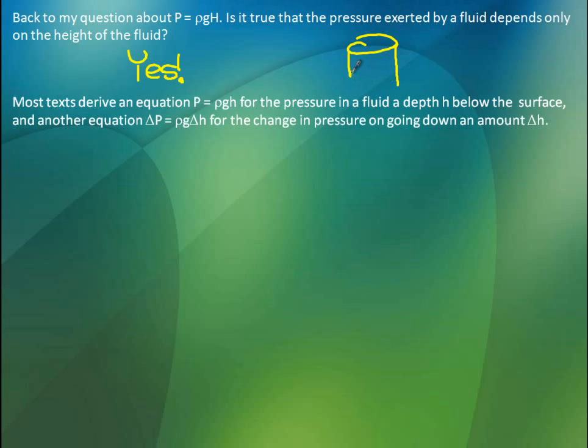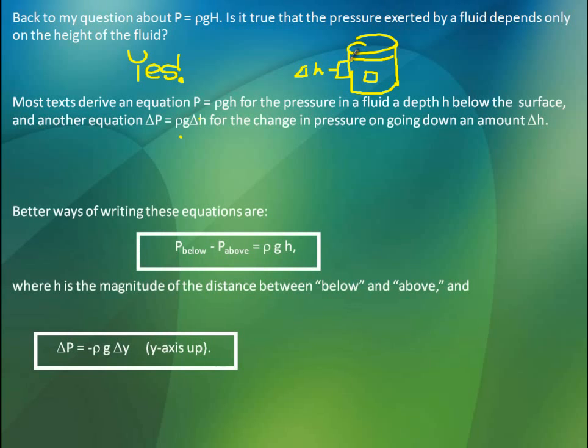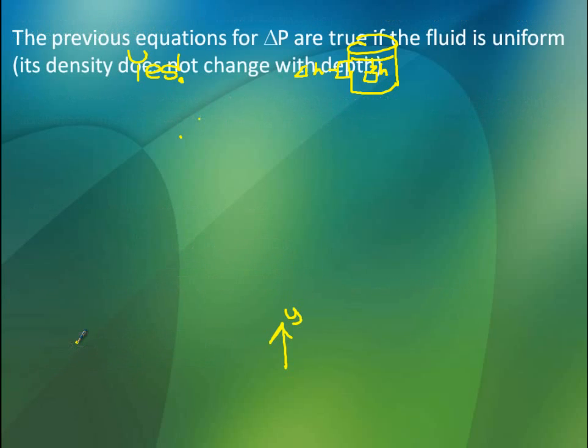And another equation, important, the delta, change in pressure, going down. So start it here, go down to here, that'll be a delta H. From here to here. Better ways of writing these though. The pressure below the surface minus the pressure above equals that rho GH, where H is the magnitude of the distance between below and above. So we're just looking for that H will be just that guy right there between below and above. And the other guy, we're not going to use H, we're going to use Y's instead. And that's saying that Y goes up. So that's why we have that negative there. So if we go down below the surface, this delta Y is going to be negative. It's going to get rid of that negative sign. It's going to give us that change of pressure.